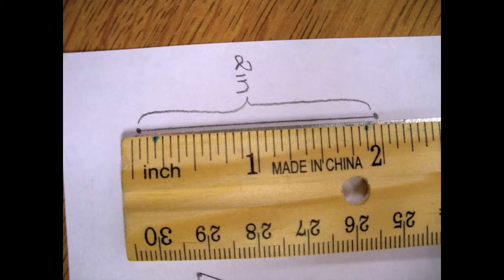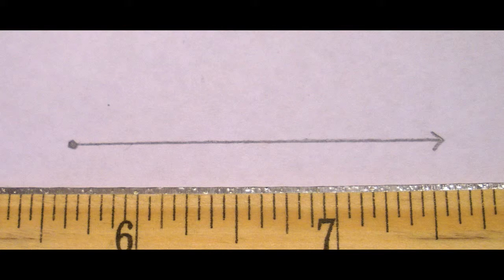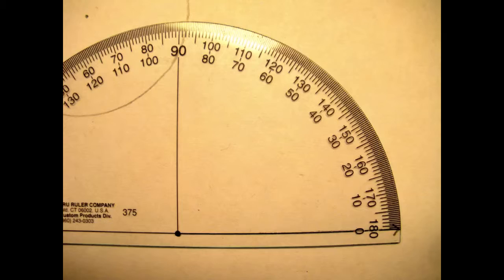We can use rulers to measure things and to create straight lines. From that straight line we can make an angle using our protractor.